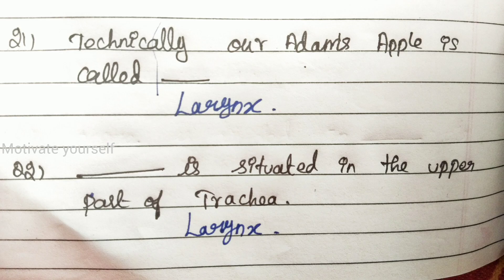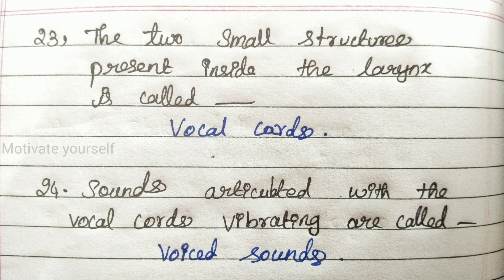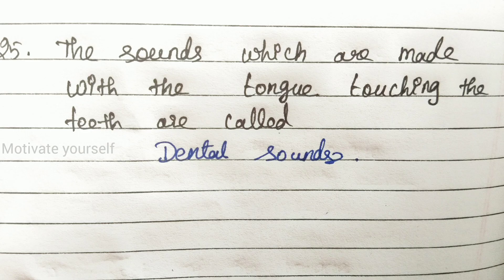Question 20: Technically, our Adam's apple is called the larynx. Question 21: The larynx is situated in the upper part of the trachea. Question 23: The two small structures present inside the larynx are called vocal chords. Question 24–25: Sounds articulated with the vocal chords vibrating are called voiced sounds. The sounds which are made with the tongue touching the teeth are called dental sounds.